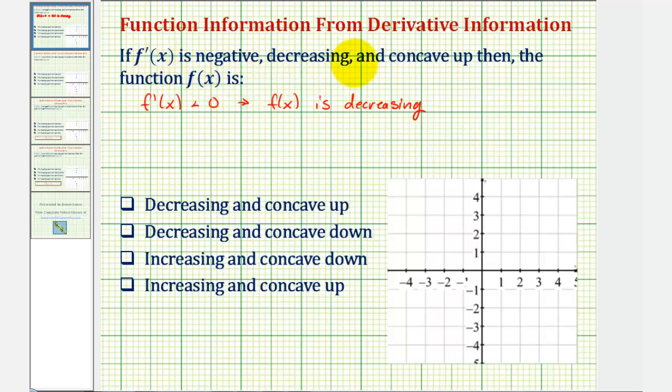Next, f prime of x is decreasing, which means the derivative of f prime of x, or the second derivative, would be negative.